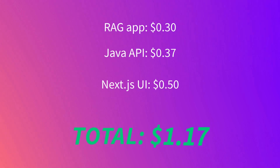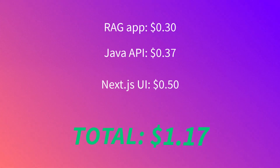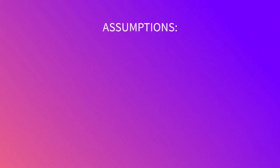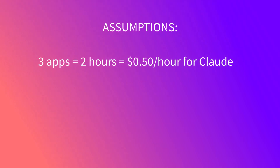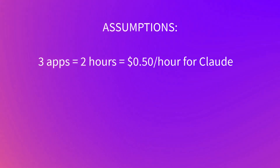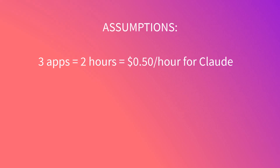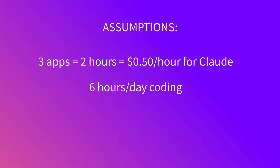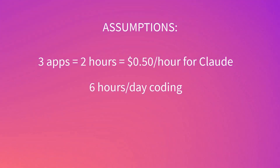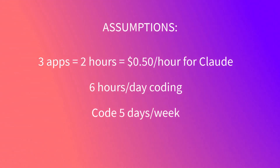So we have some metrics showing what we actually spent on those three apps. How do we use this information to project what we might spend in general? To draw any conclusions, we need to make some assumptions. I'll assume that it took me two hours — that's probably about accurate — to build all three apps. That's about $0.50 an hour for using Claude. Let's assume that you can code six hours a day and five days every week of the month.